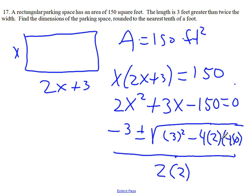So work this out in your calculator to simplify the radical. So we'll get negative 3 plus or minus the square root of 1209 divided by 4.